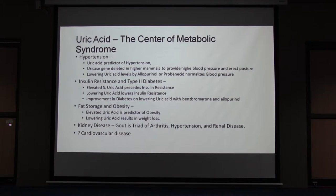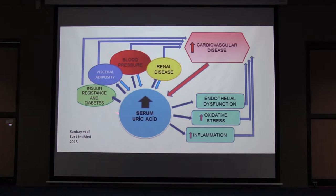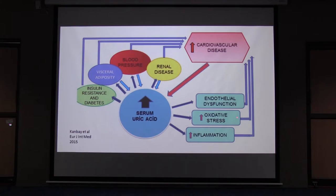Uric acid is related to insulin resistance, visceral adiposity, increase in blood pressure, and renal disease — all of which are risk factors for cardiovascular disease. But how does it do it? That's a big question. One answer is that there is endothelial dysfunction, oxidative stress, and inflammation. Uric acid itself does not produce oxidative stress, but whenever there is elevation of uric acid, there is an increase in oxidative stress.